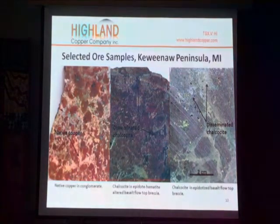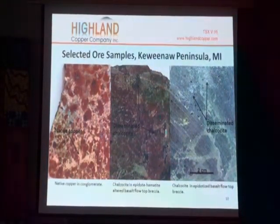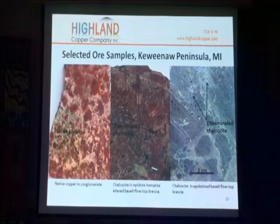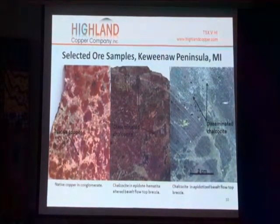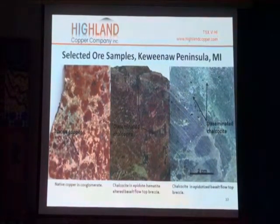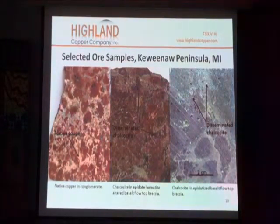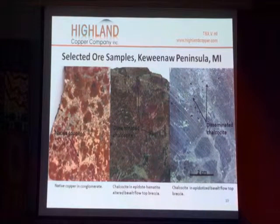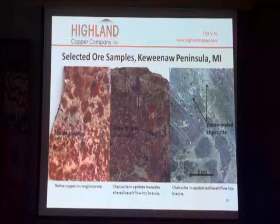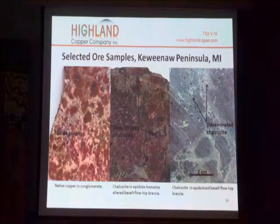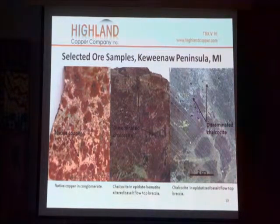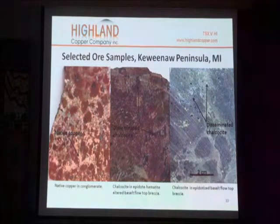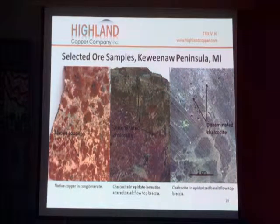Basically you have the native copper, like here, and the chalcocite, which looks very much different — it's very dark. When 543 was first discovered, the drillers were wondering why we were drilling where we were drilling, because they could not see any copper. It was a black mineral in a black rock. I've got some in my pocket — if you'd like to have a look, I can show you what that looks like.